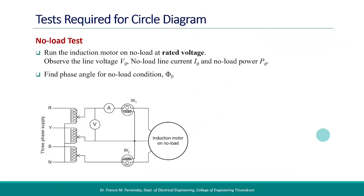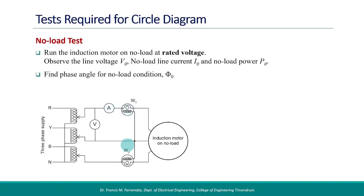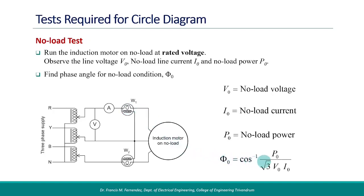For the construction of the circle diagram, we need some test data. First, the no-load test readings. The motor is to be operated at the rated voltage without any load using the circuit diagram shown here. Adjust the auto transformer to obtain rated voltage across the motor terminals and take the readings. We get the no-load voltage V0, the no-load current I0, and the sum of the two watt meter readings gives the no-load power. From these readings, the no-load phase angle phi0 can be calculated using the expression shown here. I0 and phi0 are required for construction of the circle diagram.